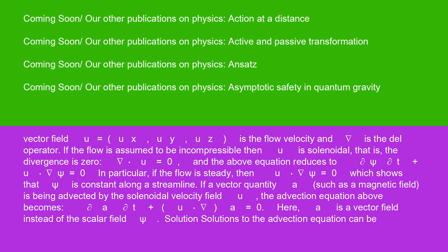If a vector quantity a, such as a magnetic field, is being advected by the solenoidal velocity field u, the advection equation above becomes ∂a/∂t + (u·∇)a = 0. Here a is a vector field instead of the scalar field ψ.